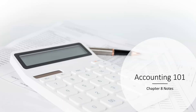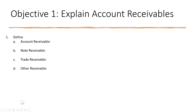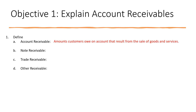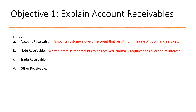In this video we're going to cover the notes for chapter 8, which is accounting for receivables. We'll start with some definitions. Accounts receivable, or accounts receivable, are amounts customers owe on accounts that result from the sale of goods and services.